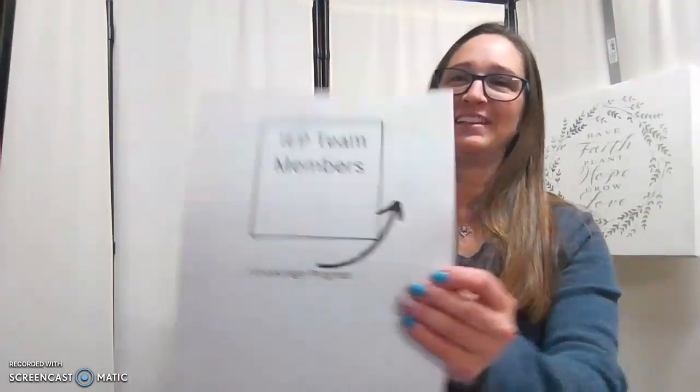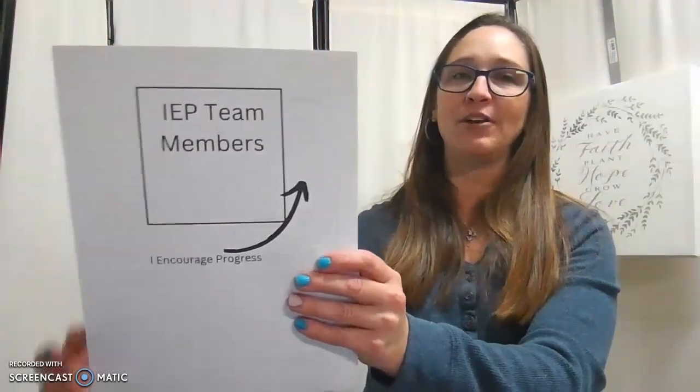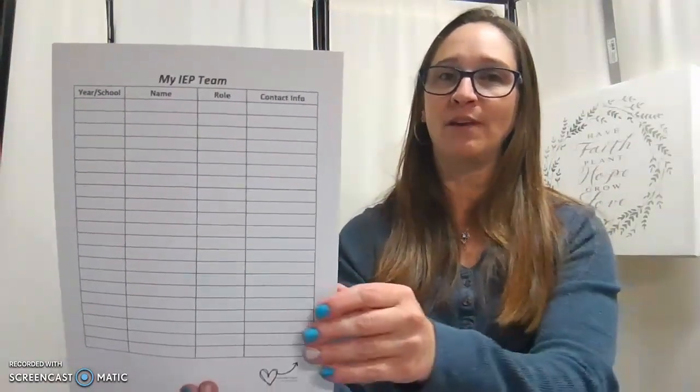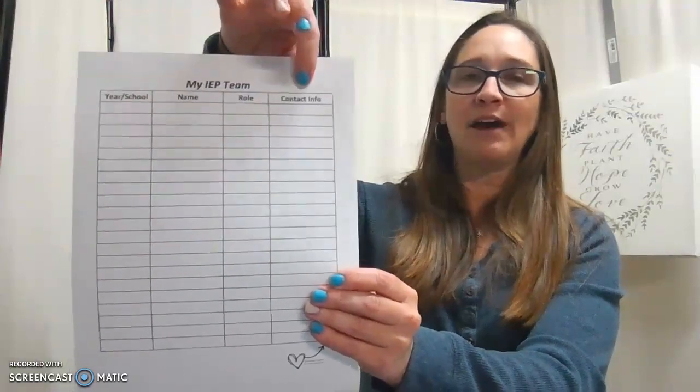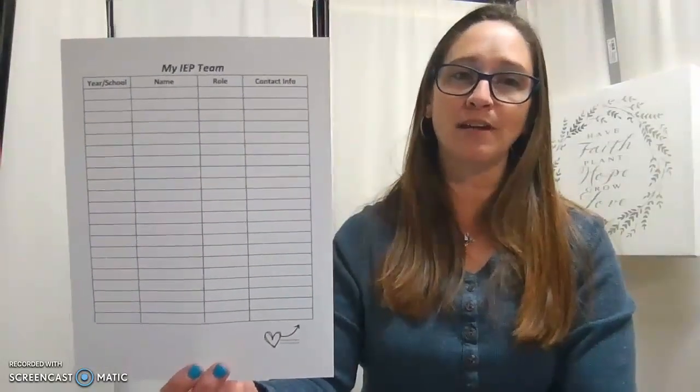The first tab that we have is IEP members. In here, you're going to want to keep a list of all your teachers, case managers, and related service providers who service your child's IEP. I also like to know how best to contact them. I personally write in the school year, so at the beginning of the year, what school they're going to and the year, the name of the person I'm talking to, what role they play on that IEP team, and how to contact them. Some teachers do best to give them a call, some are best to email, and several of my teachers use the Remind app, so I would put in where's the best place to contact them.